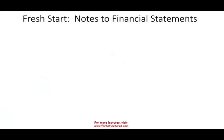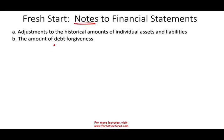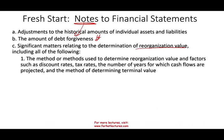We also have to add additional notes to the financial statements, such as adjustments to the historical amounts of individual assets and liabilities and how we came up with those adjustments, as well as the amount of debt forgiveness. Note that this is only in the notes — not the numbers in the financial statements. We also need to disclose significant matters relating to the determination of the revaluation value, including the method used to determine the reorganization value, and factors such as the discount rate, tax rate, number of years in which cash flows are projected, and the method of determining terminal value.